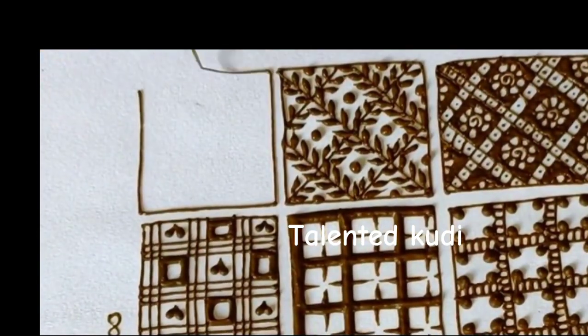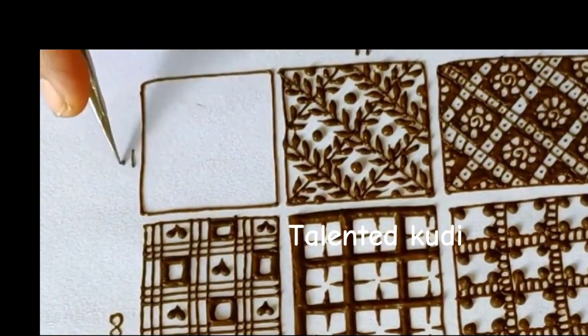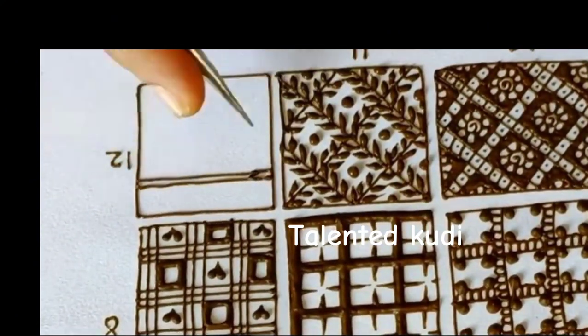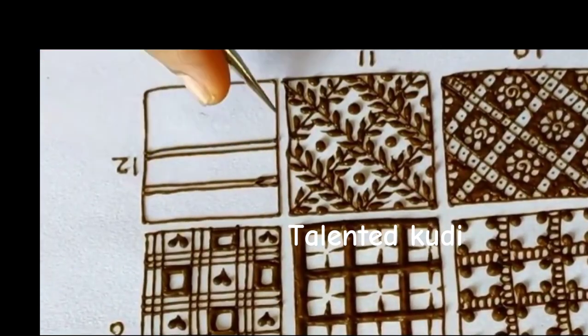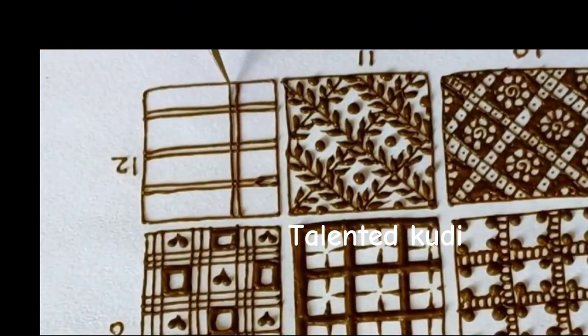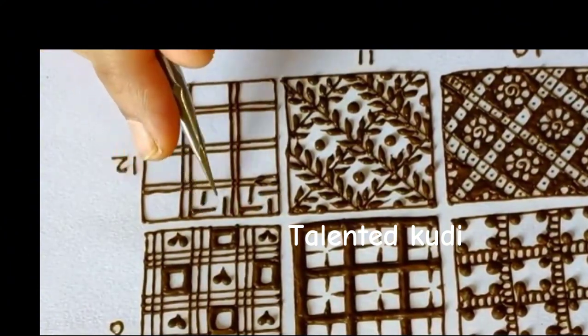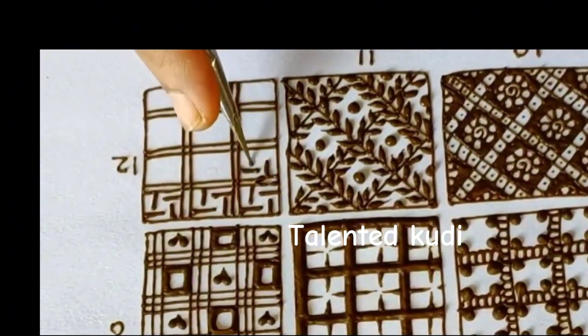Last grid design is swastik. We will need double line boxes. We will fill it in the last one. We will not make directly thick lines. First, we will make double lines. After that, we will make swastik shape. We will make four lines to make swastik shape.